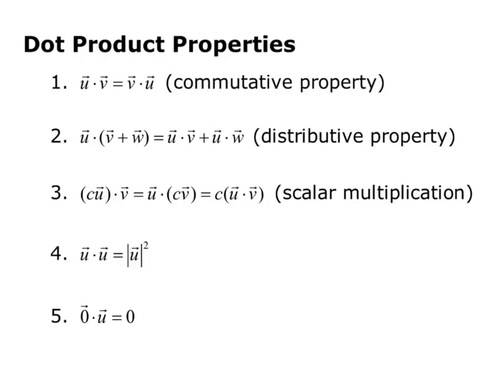Here is the basic dot product properties. u dot v equals v dot u. So it has a commutative property, meaning you can switch the order.